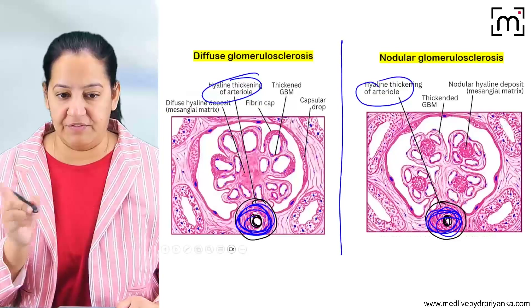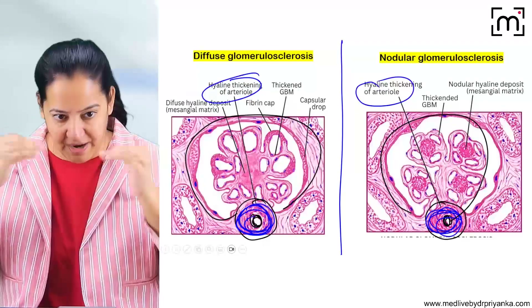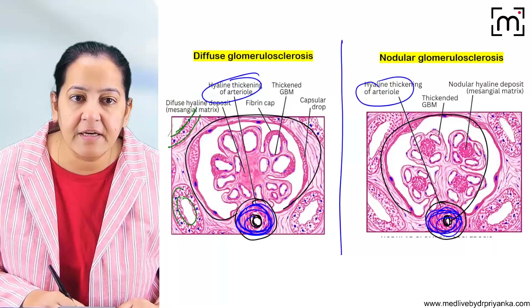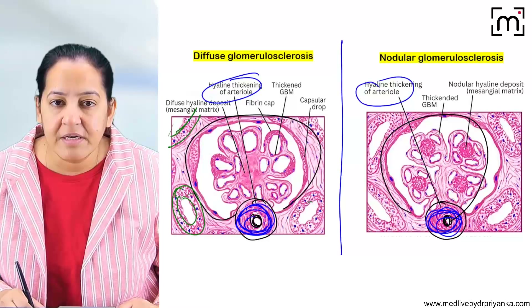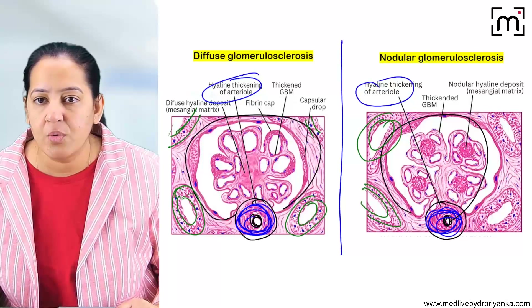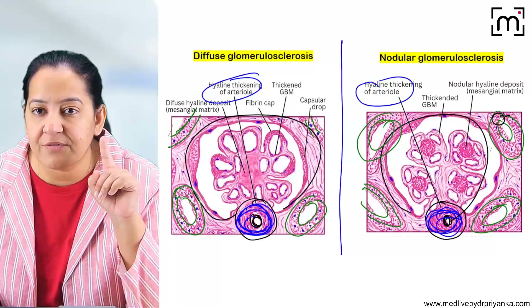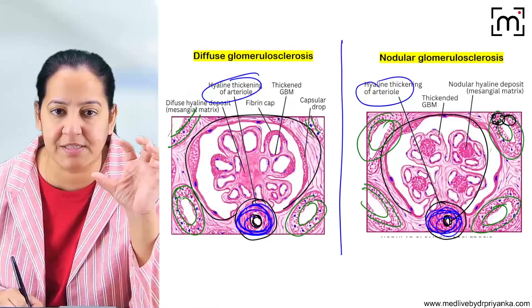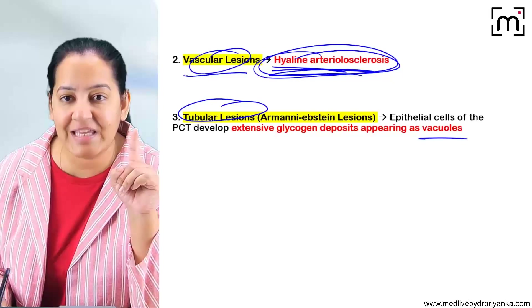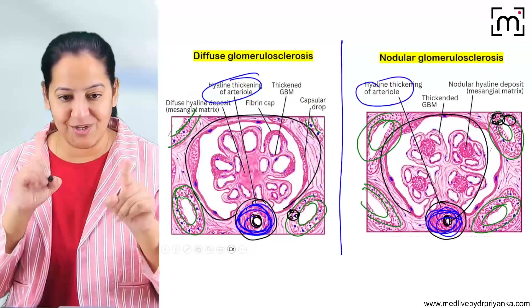Coming to the tubules — the cells of the tubules contain vacuoles inside their cytoplasm. These are glycogen vacuoles: the glycogen deposits appear as vacuoles. This is known as the Armani-Ebstein lesion, and it is common to both diffuse and nodular glomerulosclerosis.